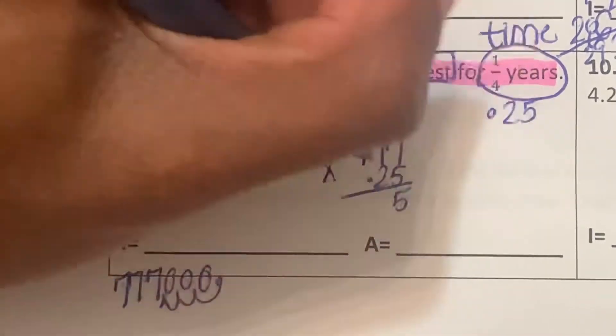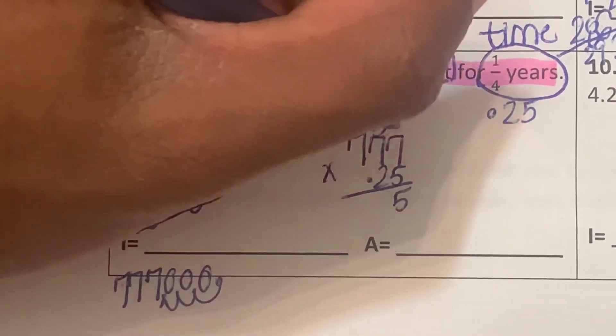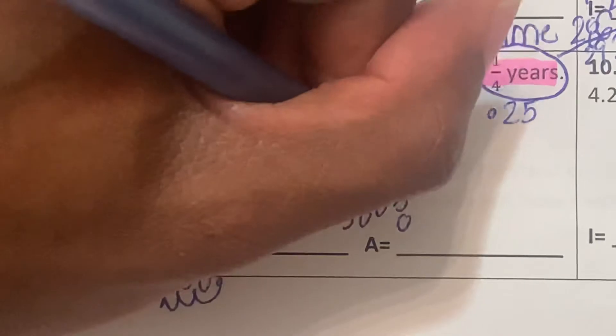5 times 7 is going to be 35, carry the 3. 5 times 7 again is going to be 35 plus 3 is going to be 38, carry the 3. 5 times 7 is 35.